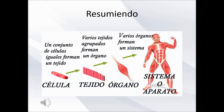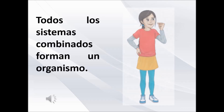Resumiendo: un conjunto de células iguales forman un tejido. Varios tejidos agrupados forman un órgano. Varios órganos forman un sistema. Y todos los sistemas combinados forman un organismo.